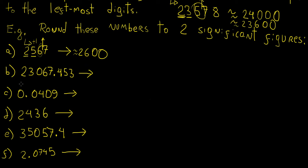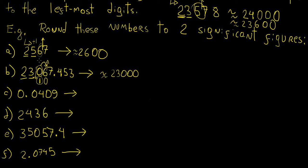For the next number, which has decimal places, we still start from the leftmost significant digits. We grab the first two and look at the next digit, which is 0 — that tells us little, so we look further right. The following digit is 1, which is much closer to 0 than to 10, so we round down the whole number to 23,000. This makes sense because the number is clearly much closer to 23,000 than to 24,000.